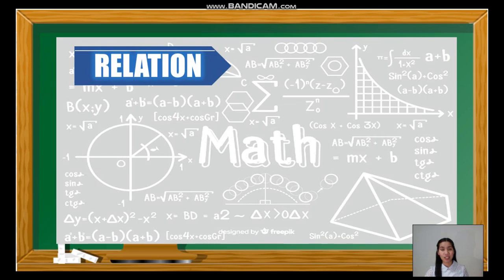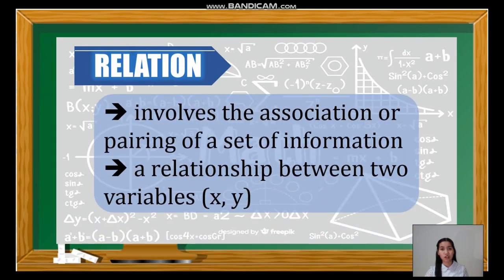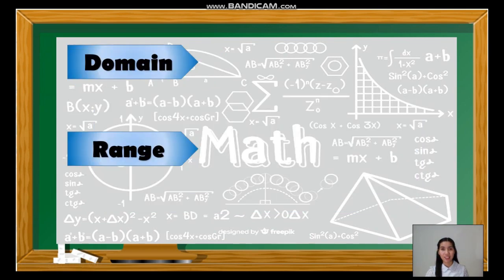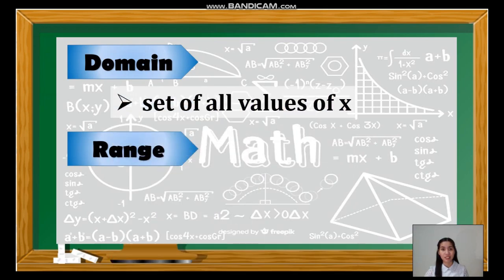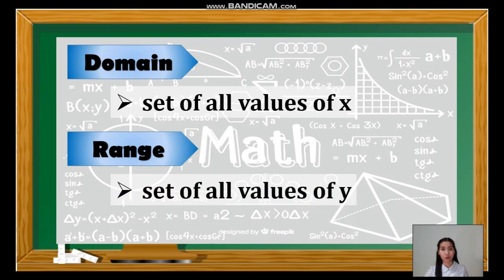So what is a relation? When we say relation, it involves the association or pairing of a set of information, pairing of things or objects. It is also defined as a relationship between two variables, let's say x and y. In relation, since it contains pairing of objects, we usually look for the domain and range. When we say domain, it is a set of all values of x, while the range is a set of all values of y.